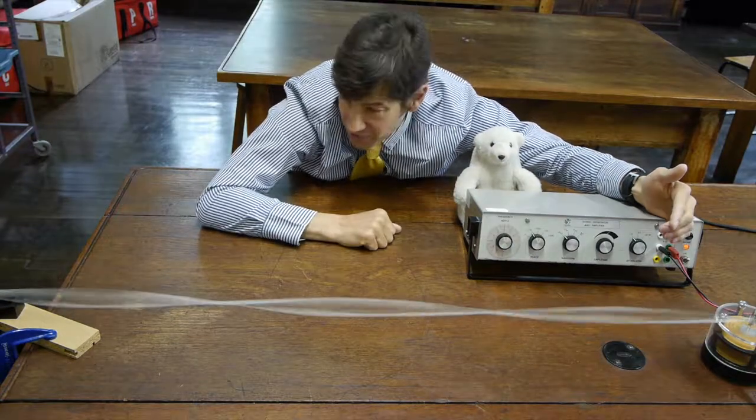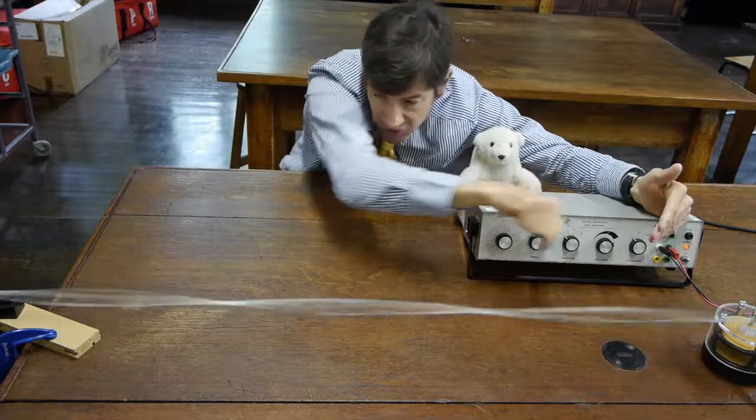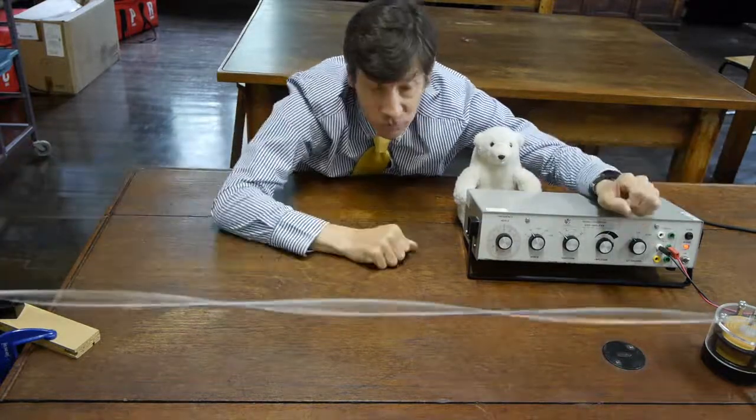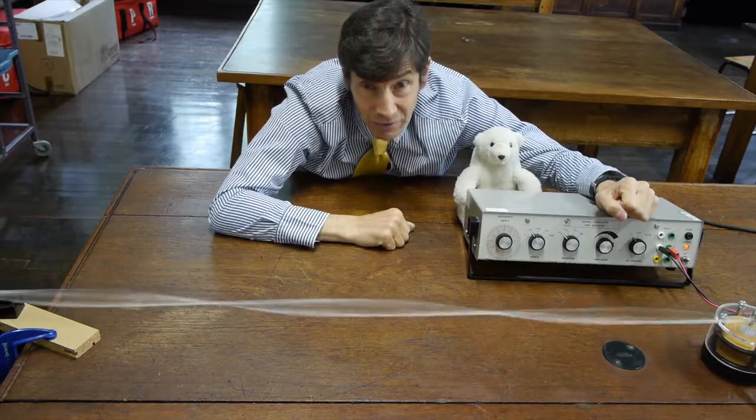A-level students need to know, of course, how these waves are formed by waves travelling down, reflecting at the far end, and then meeting the next wave that comes along. Producing a standing wave pattern.